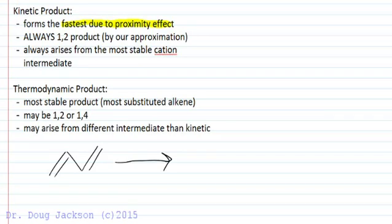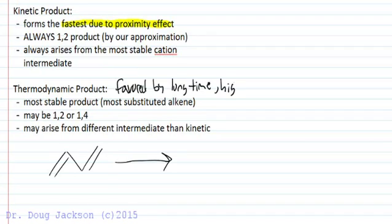The thermodynamic product is not tied down to any particular addition order, because if there's enough energy in the system and we give it enough time — high temperature and long reaction time — then we can equilibrate to the most stable product. We can reverse steps: we can form the kinetic product, reverse it, then reform. We'll show that with an energy diagram in a moment.